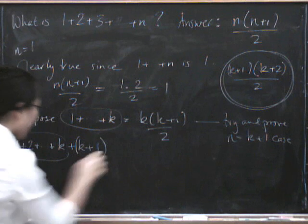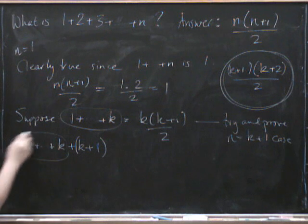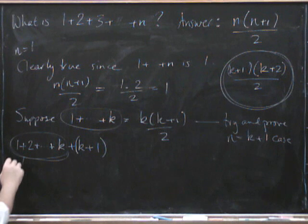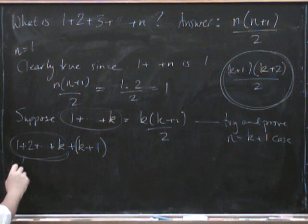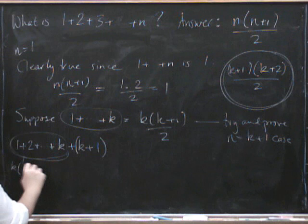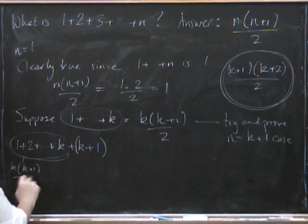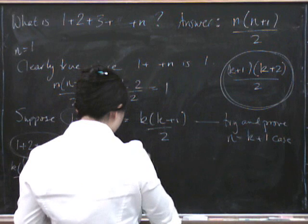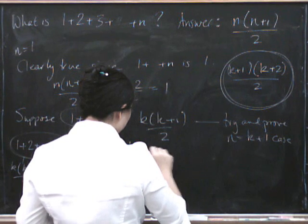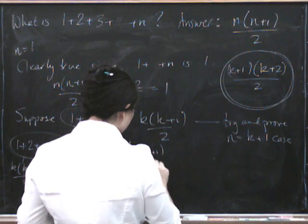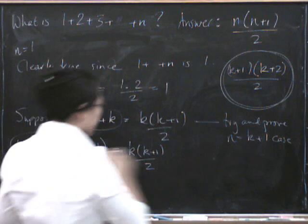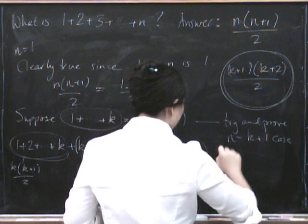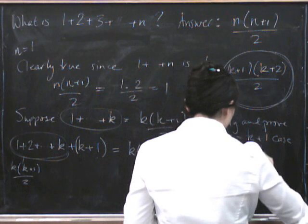Maybe I'll put brackets around that to make it clearer. So we already know what this part is by assumption, because by assumption this part is k times k plus 1 over 2. So this equals k times k plus 1 over 2, and now what's the leftover part? It's k plus 1. So that's by our assumption.